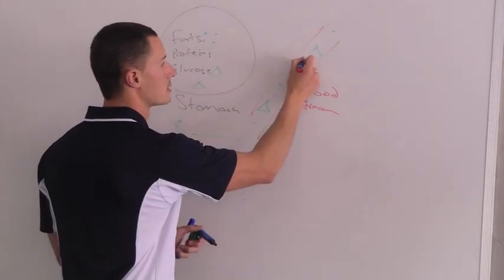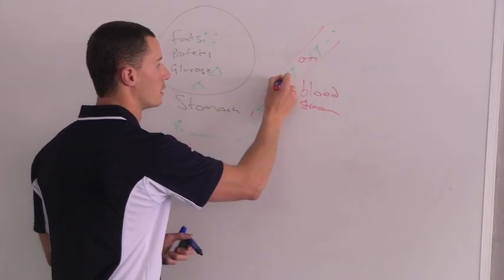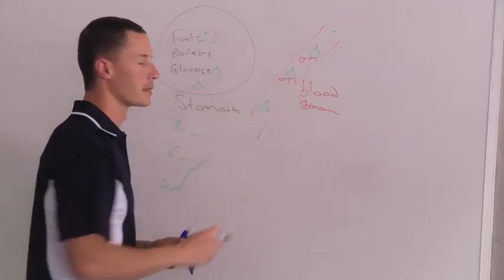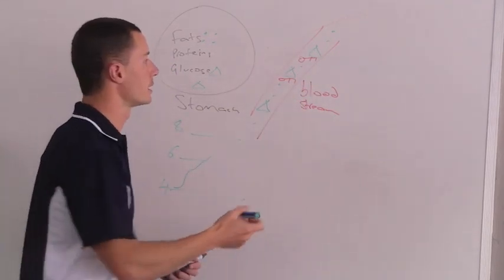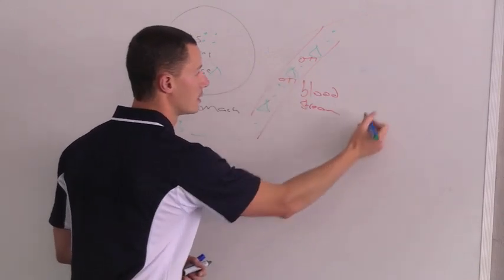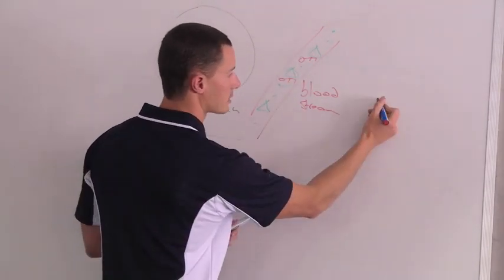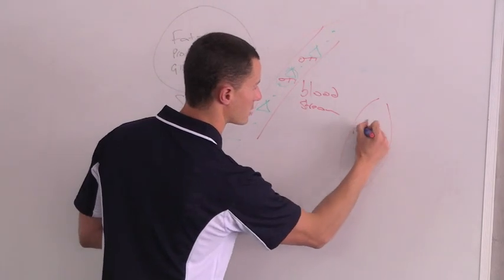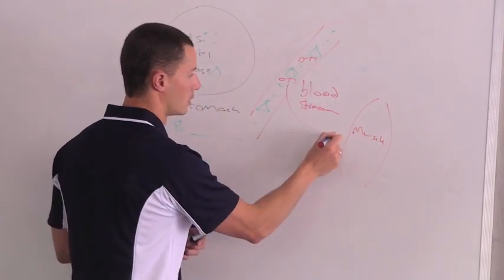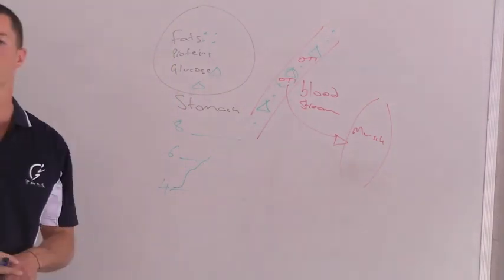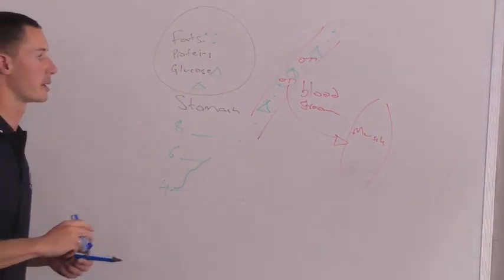Our body releases a hormone called insulin, which we draw as a key. If insulin does its job correctly, it binds with the glucose and takes the glucose into our muscle cell, which is responsible for clearing 70-90% of the glucose in our body.